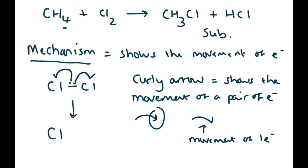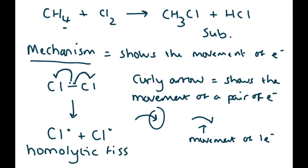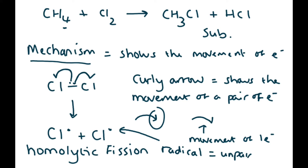When this bond breaks, you end up with one chlorine atom that gets its electron back and another chlorine atom that gets its electron back. This type of bond breaking is called homolytic fission — the bond is broken and you form two species that are the same. These atoms with dots are called radicals.